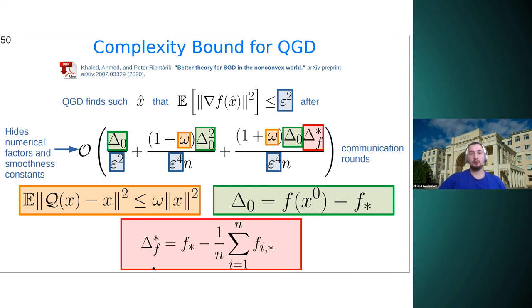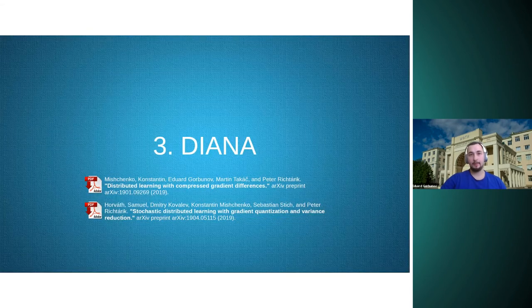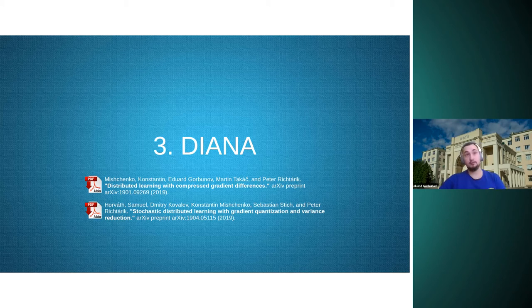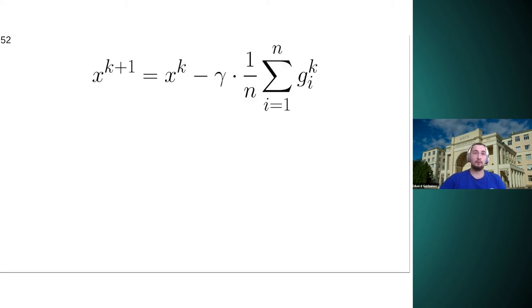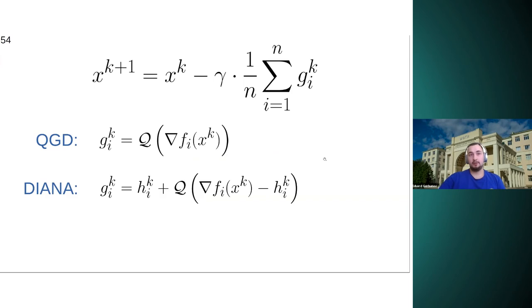Okay, but nevertheless, the dependence on epsilon is not optimal in this method. And that is why alternative approaches are needed. And there exists an alternative approach, and it is called DIANA. It was developed in 2019, and it looks very similar to QGD. And we can actually write the update rule in the same way, but the difference will be in the way how we define GIK. In QGD, let me remind you that in QGD, GIK is just quantized version of the true gradient. But in DIANA, GIK is computed in a more sophisticated way.